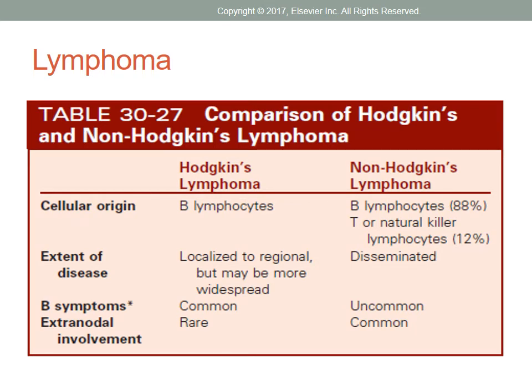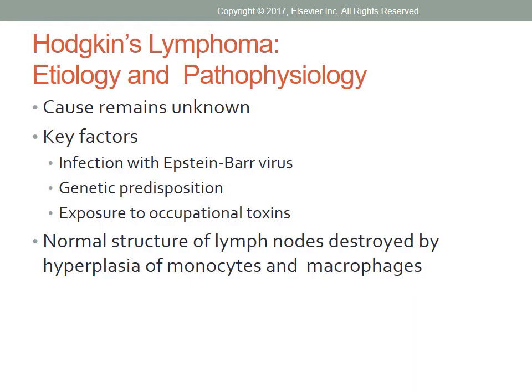This is a comparison of the two types of lymphomas as presented in Table 30-27 on page 641 in the text. Hodgkin's lymphoma, also called Hodgkin's disease, is a malignant disease characterized by proliferation of abnormal giant multinucleated cells called Reed-Sternberg cells, located in the lymph nodes. Although the cause of the disease remains unknown, suspected factors thought to play a role include infection with the Epstein-Barr virus, genetic predisposition, and exposure to occupational toxins.